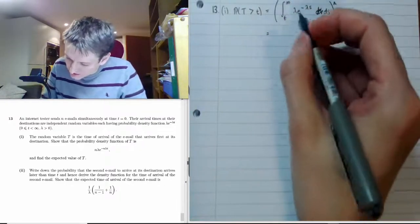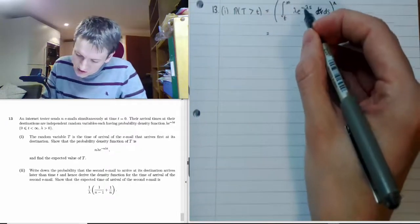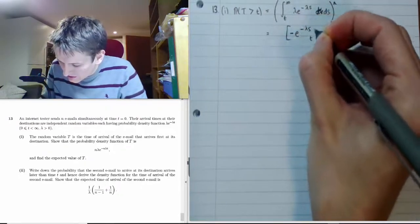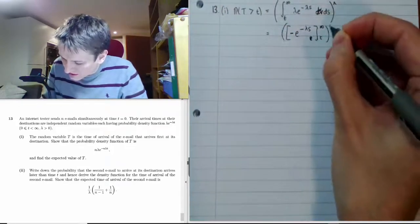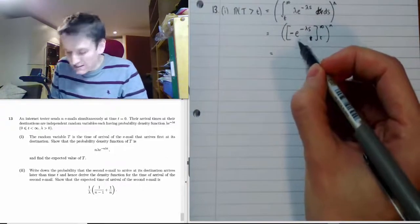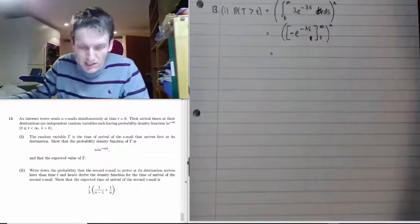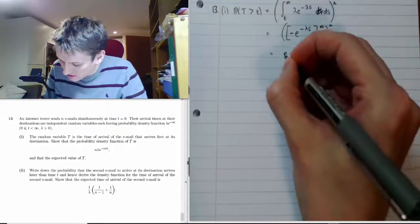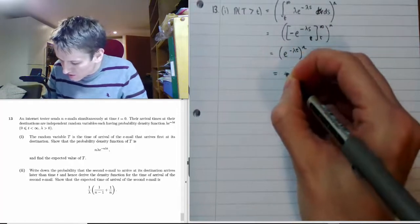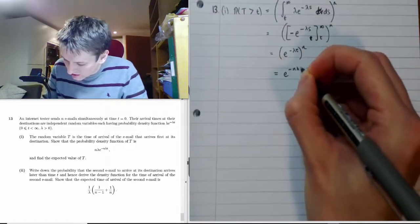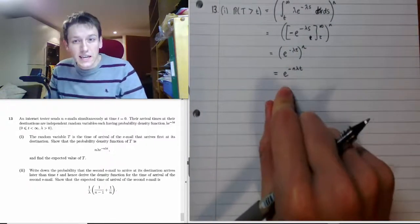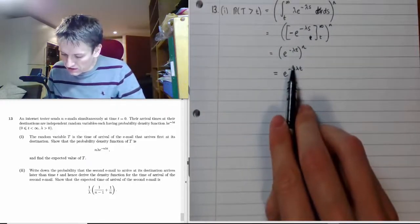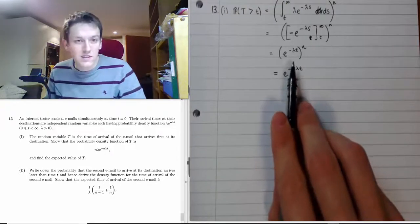We work out the integral: dividing by −λ gives −e^(−λs) evaluated from t to infinity, all raised to the power n. Plugging in infinity gives e^(−∞) = 0, and the lower limit gives e^(−λt), so we get e^(−λt) all to the power n, which is e^(−nλt) by the rules of indices. A useful special case to note is that when n = 1, the probability that one email arrives after time t is simply e^(−λt).